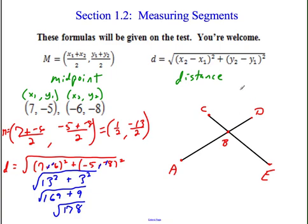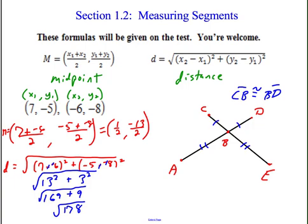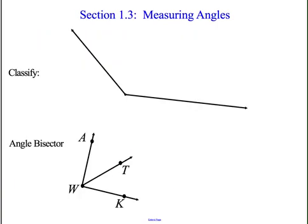We also talked about congruency. For example, if CB is congruent to BD, I'll say 'mark the picture' and you mark the tick marks. Congruent means the same — so if I give you that AB has the same tick marks as another segment, those two segments are equal in length. Congruent means the same, so that segment equals that one.